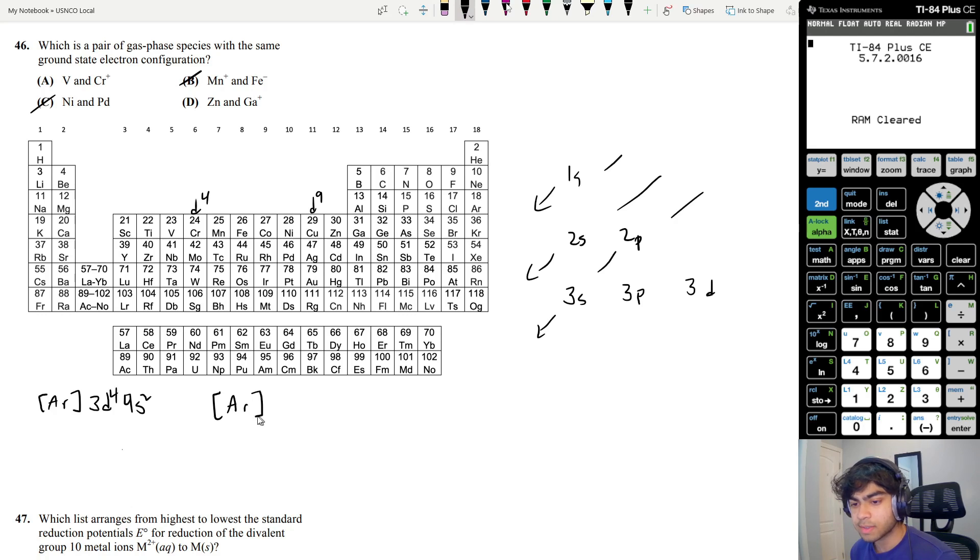For example, chromium, the actual structure of chromium looks like 3d5 and 4s1. One of the electrons donated itself to get the half-filled d orbital, which is especially stable. And the same goes for the d9 orbital. So you would have 3d10, 4s1. One of the electrons from the s orbital would donate itself to fully fill the d orbital, which increases the stability of the atom overall. So elements in this column are likely to have somewhat of a strange electronic structure. Vanadium and chromium plus don't actually have the same electronic structure because of this weird d5, d10 thing going on. Therefore, the only answer choice with the same ground state electronic configuration is answer choice D.